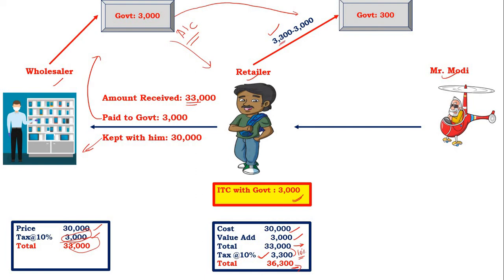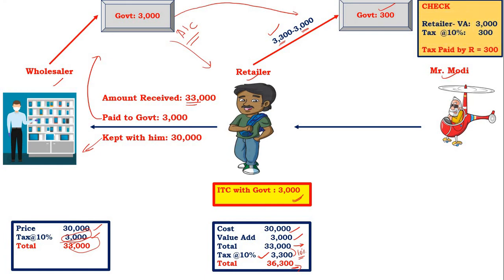The retailer's invoice shows 3,300 total tax. The government already has 3,000 in the retailer's input tax credit account. So the retailer deducts 3,000 from 3,300 and pays only 300 as balance to the government. This aligns with the VAT concept: the retailer's value addition was 3,000, and 10% of 3,000 is 300 — so only 300 is paid. The prior tax paid on purchase is deposited by the wholesaler to the government.